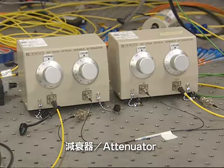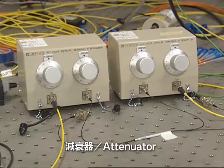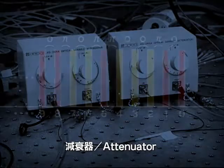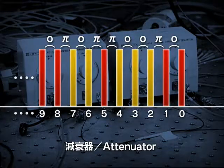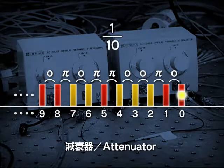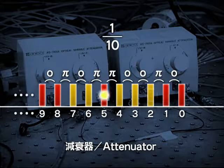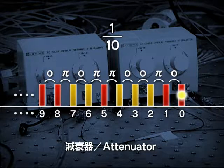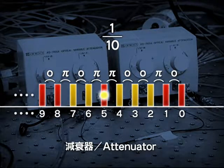Next, the pulse stream enters the attenuator. The attenuator weakens the light pulses, reducing the number of photons to one for every ten light pulses. At this point, even Alice doesn't know which light pulse has a photon.